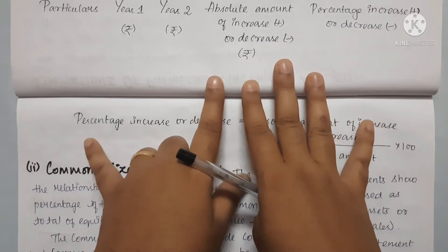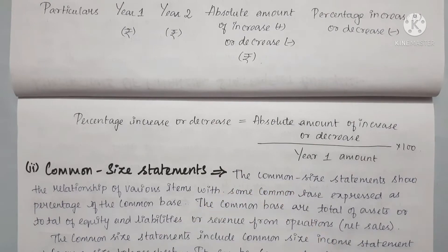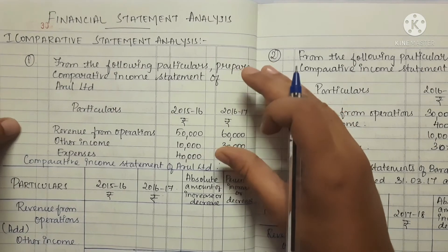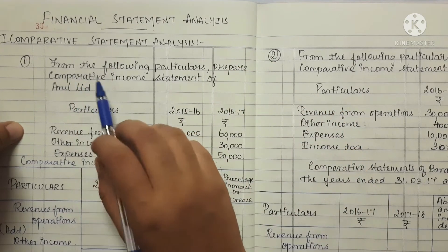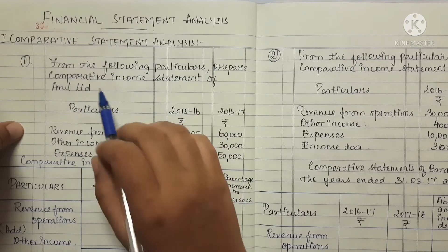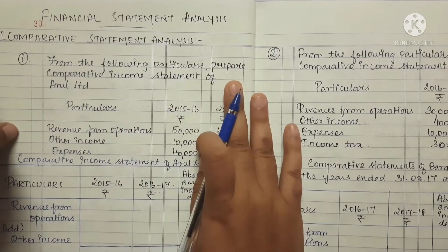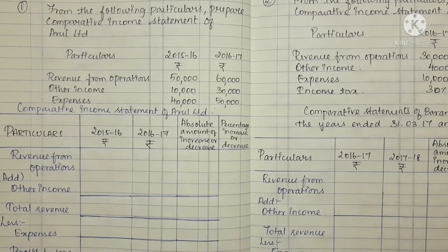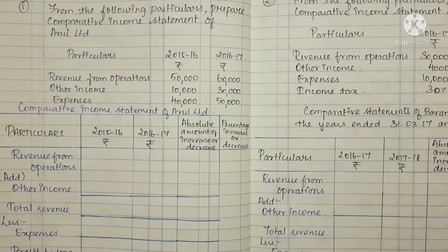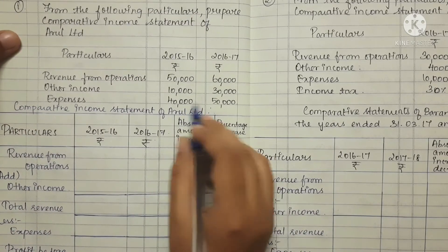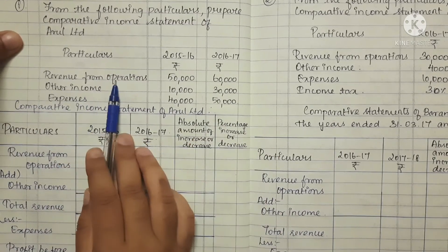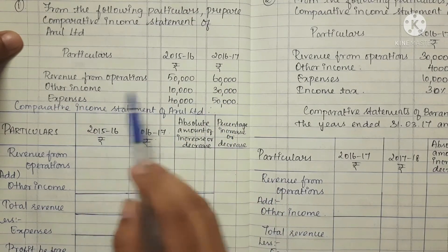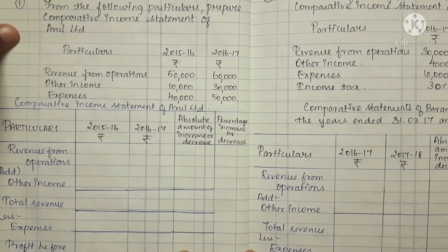Now we will look at a sum to illustrate this. From the following particulars, prepare a comparative income statement. We will give you the statement data — particulars for 2015–2016 and 2016–2017. Revenue from operations: 50,000 and 60,000. Other income: 10,000 and 30,000. Expenses: 40,000 and 50,000. Now we will prepare the comparative income statement.